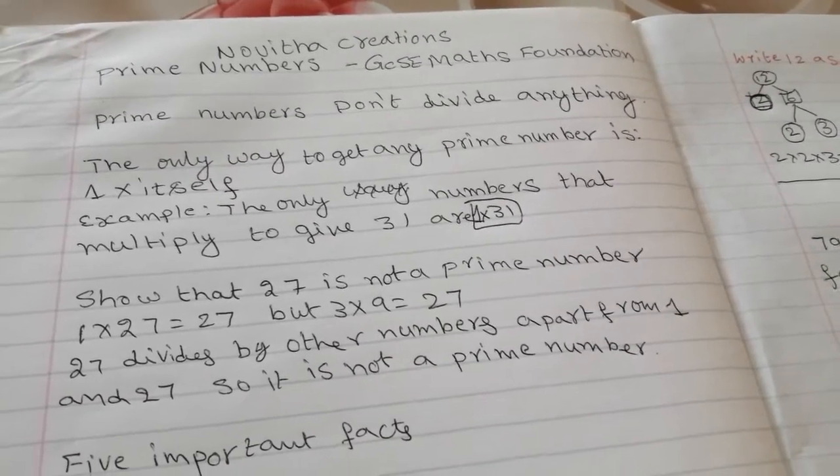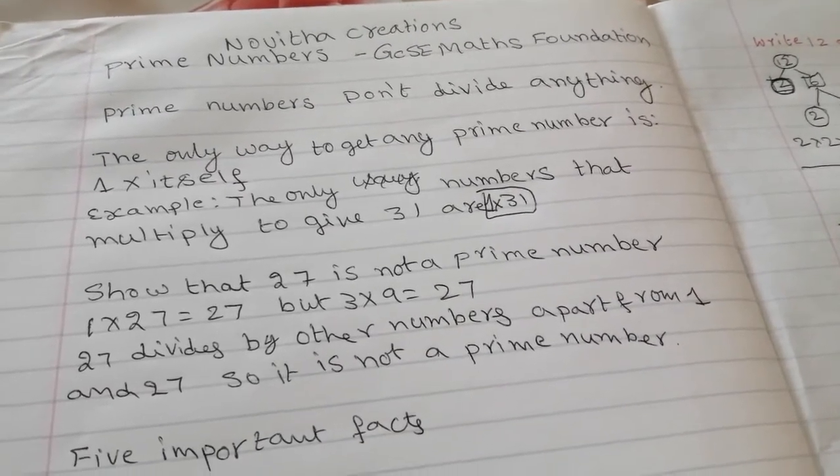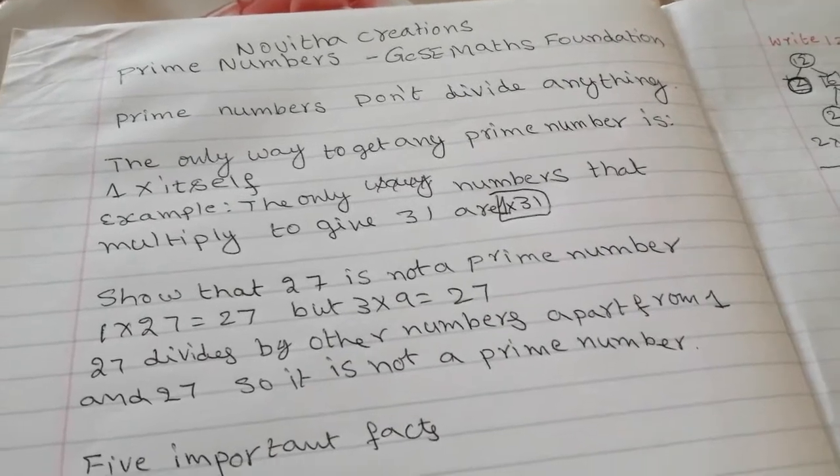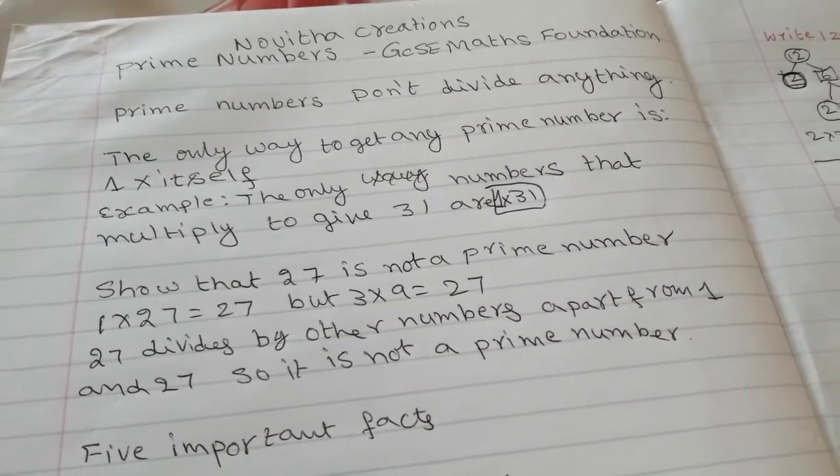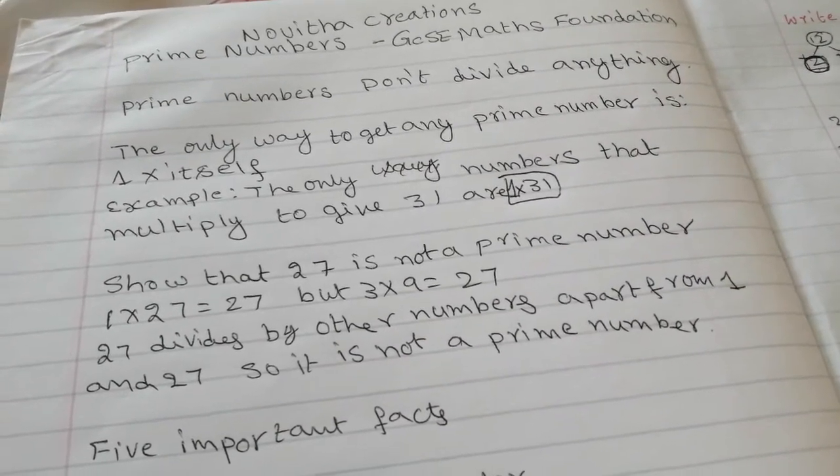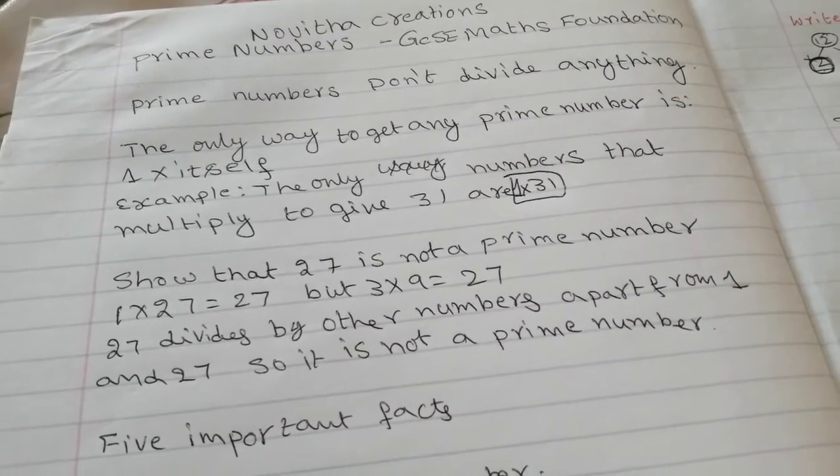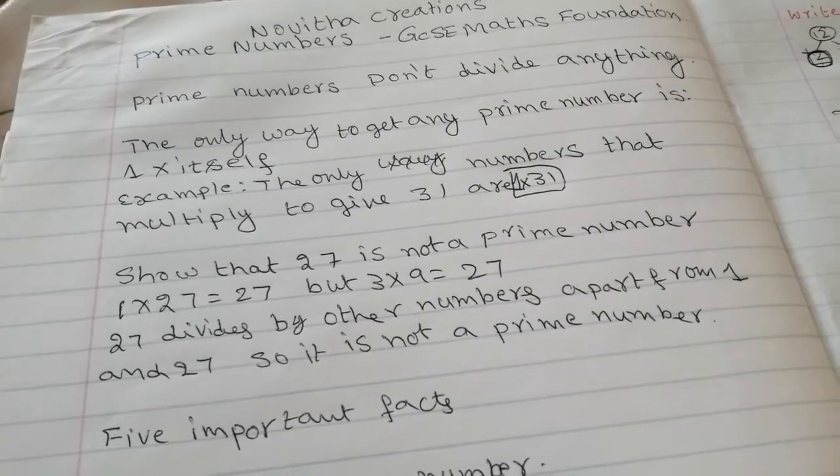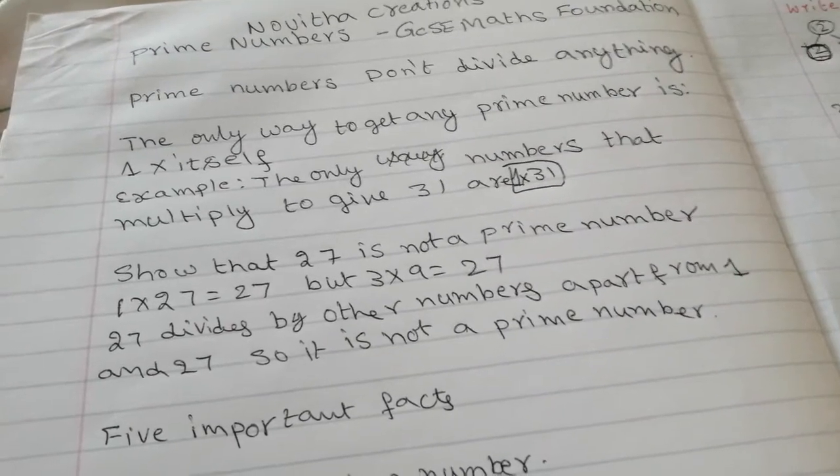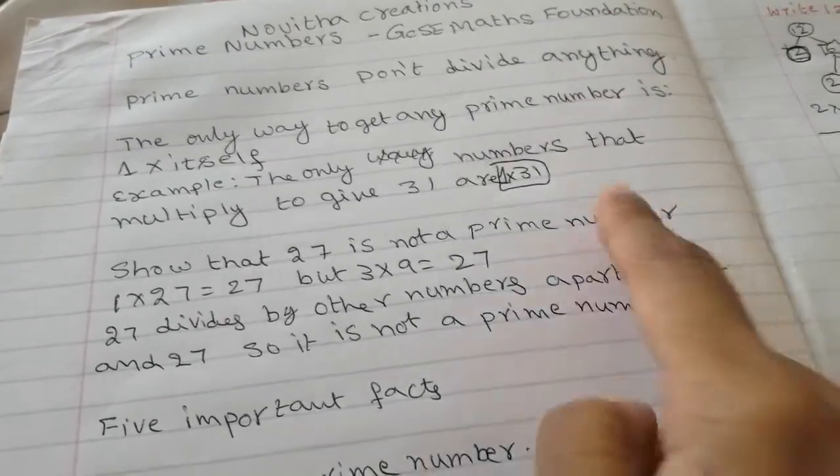What are the prime numbers? Prime numbers don't divide anything. The only way to get any prime number is 1 times itself. The only numbers that multiply to give 31 are 1 times 31. So 31 is the prime number.